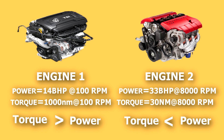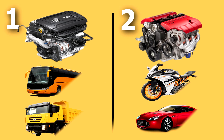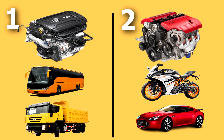The conclusion is that engine 1, with higher torque, is used in heavy vehicles or vehicles that carry heavy loads for long distances. On the other side, engine 2, with higher power, is used in light motor vehicles and small vehicles which travel short distances. I hope you understand the difference between torque and power.